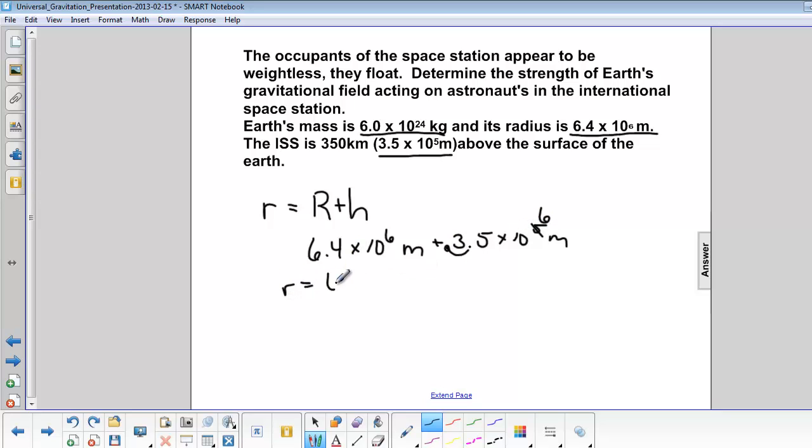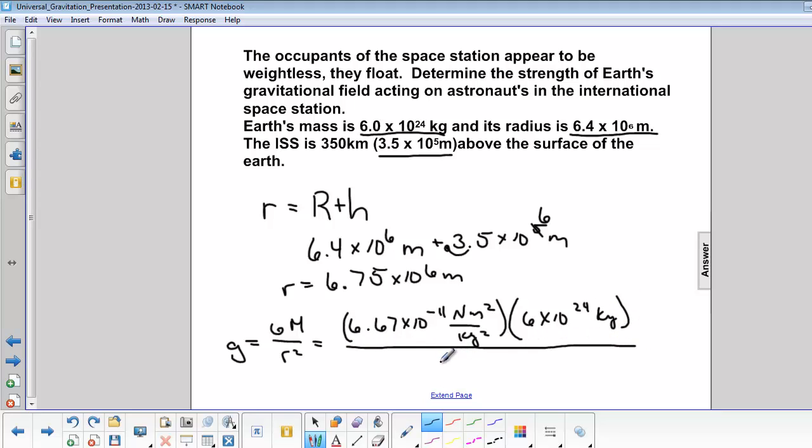So now R will be 6.75 times 10 to the 6th meters. So now we can put in our equation for G. So G is equal to big G, M, over R squared. 6.67 times 10 to the negative 11th newton meters squared over kilograms squared, times 6 times 10 to the 24th kilograms, over 6.75 times 10 to the 6th meters squared.